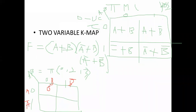Remember: max terms means we are putting 0s; min terms means we are putting 1s. Next, A bar plus B bar, put zero in the corresponding cell. Now grouping adjacent zeros: this is one group — take this as group 1, Z1. Next, is there any other group? These two are also adjacent zeros — take this as group 2, Z2.